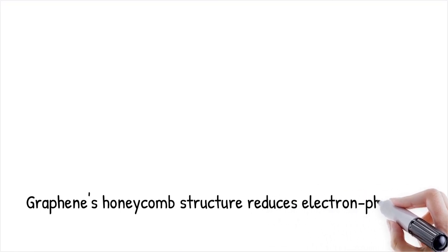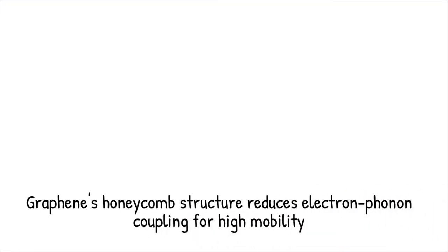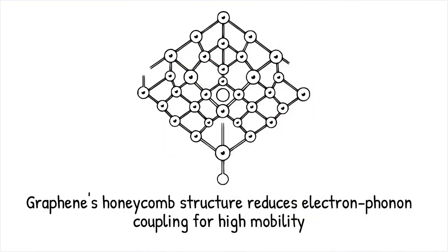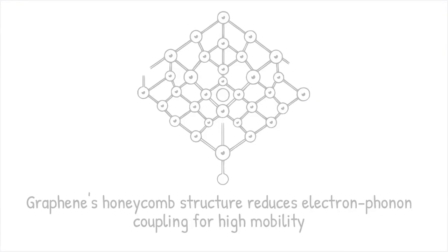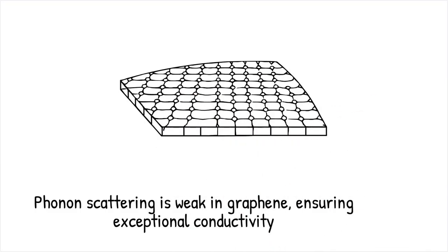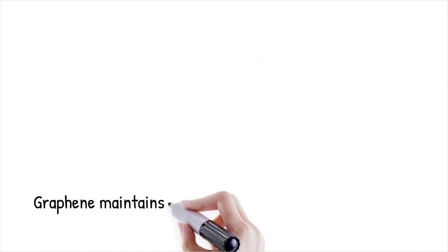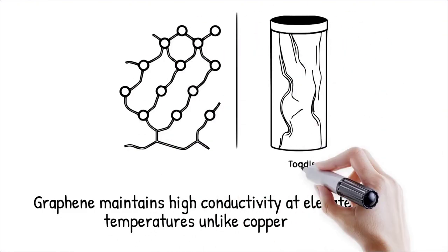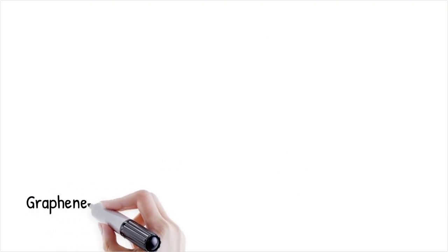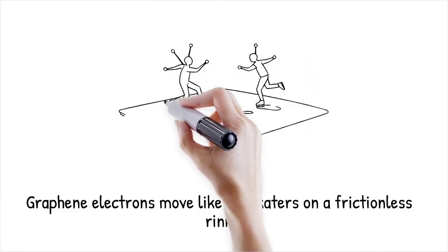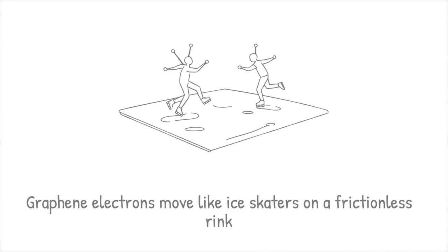In most materials, electrical resistance arises from electron-phonon interactions, where thermal vibrations of the lattice scatter charge carriers. Graphene's two-dimensional honeycomb structure leads to reduced electron-phonon coupling, allowing for ultra-high mobility. Even at high temperatures, phonon scattering in graphene remains weak, maintaining its exceptional conductivity. Unlike copper, whose resistance increases significantly with temperature, graphene maintains high conductivity even when heated. Electrons in graphene move like ice skaters on a frictionless rink, while those in traditional conductors skate over rough terrain full of obstacles.